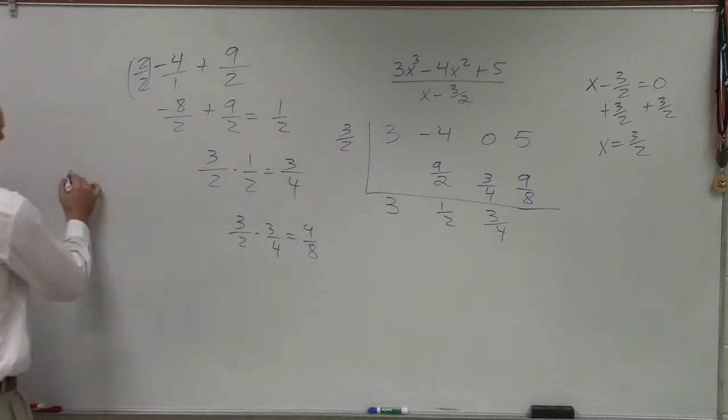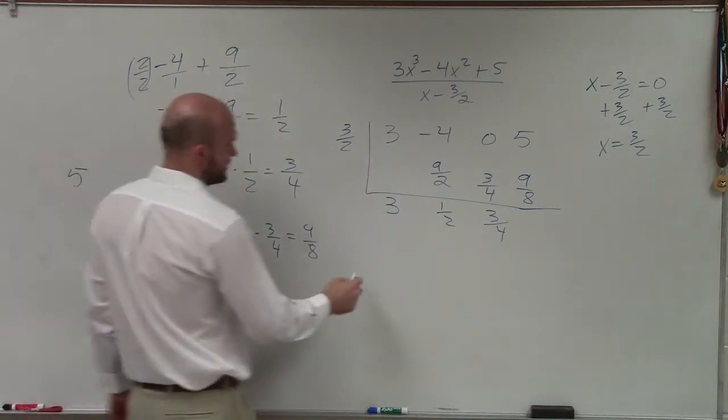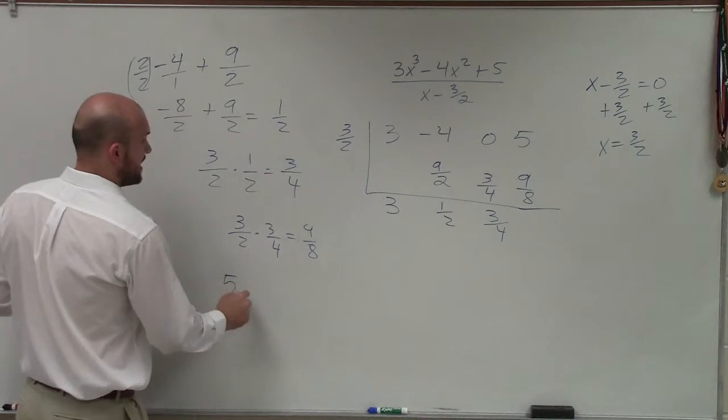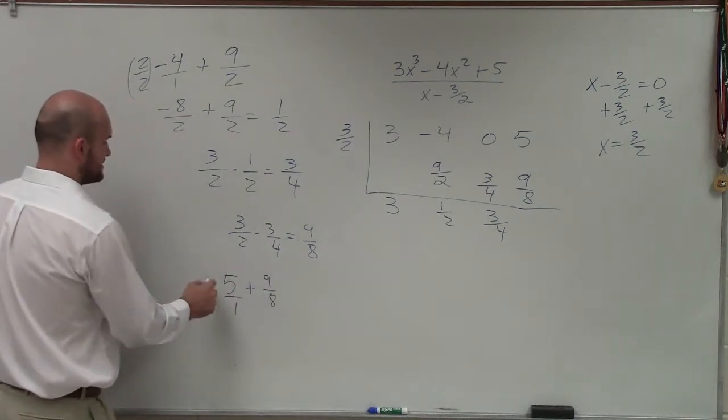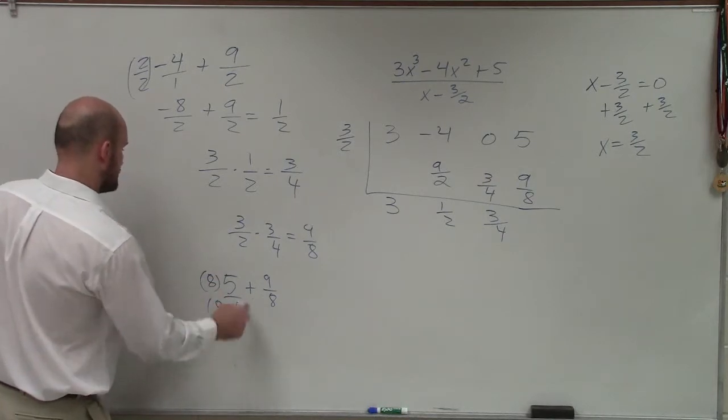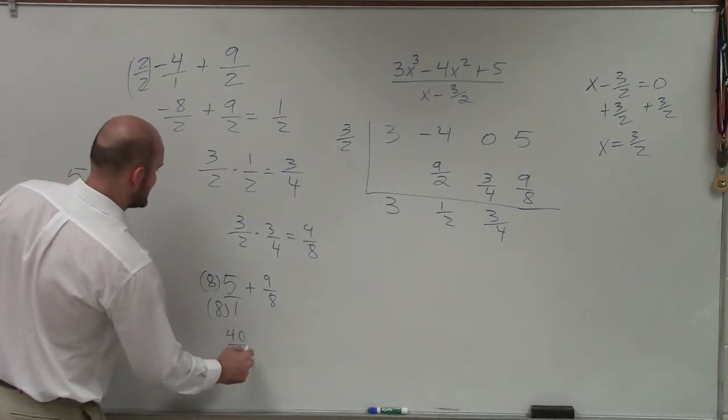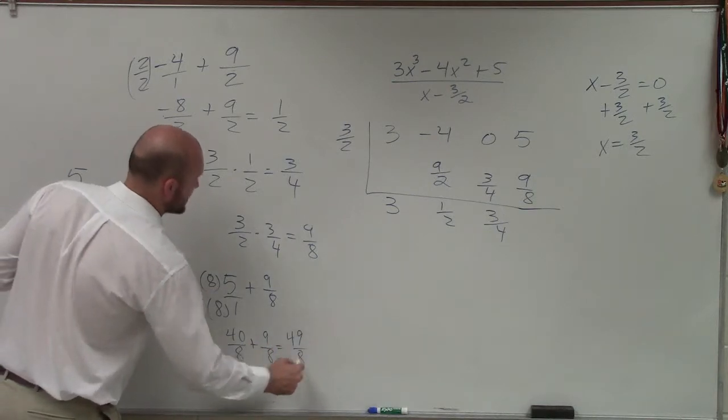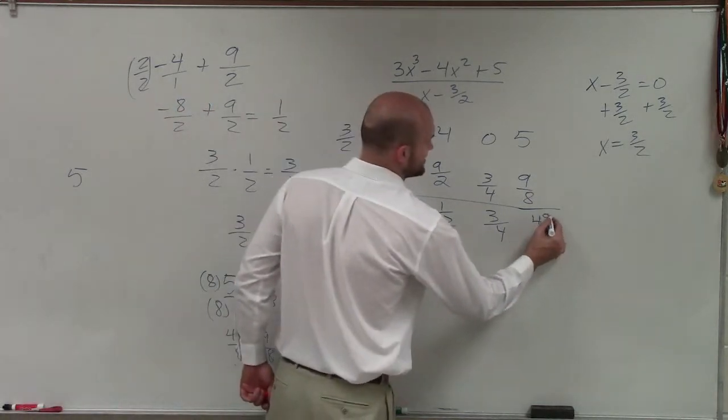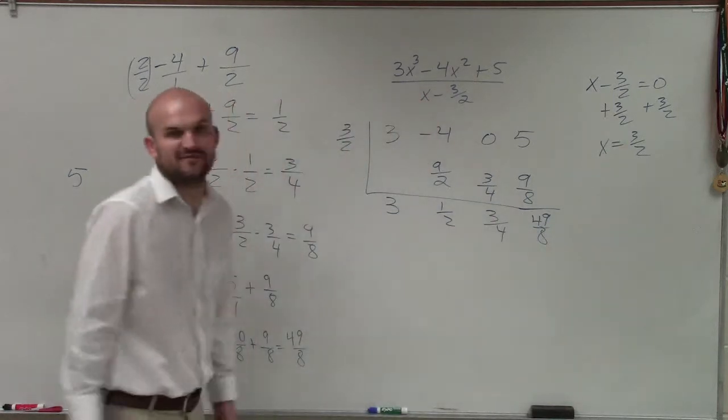Then I need to add 5 + 9/8. So therefore I need to get the same denominator, so I'll multiply by 8/8. So therefore I have 40/8 + 9/8, which equals 49/8. But don't worry, that's going to be your remainder, so it's okay if it's some weird fraction.